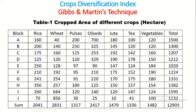A table — Table 1 — shows the cropped area of different crops. There are 10 blocks in a district, with different crops and their cultivation areas given. For Block A: rice is harvested in 160 hectares, wheat in 40 hectares, pulses in 200 hectares, oil seeds in 700 hectares, jute in 180 hectares, tea in 100 hectares, and vegetables in 120 hectares. The total area is 1500 hectares.